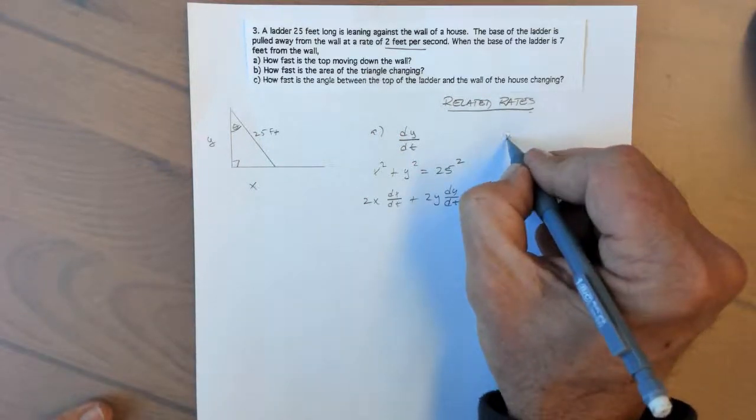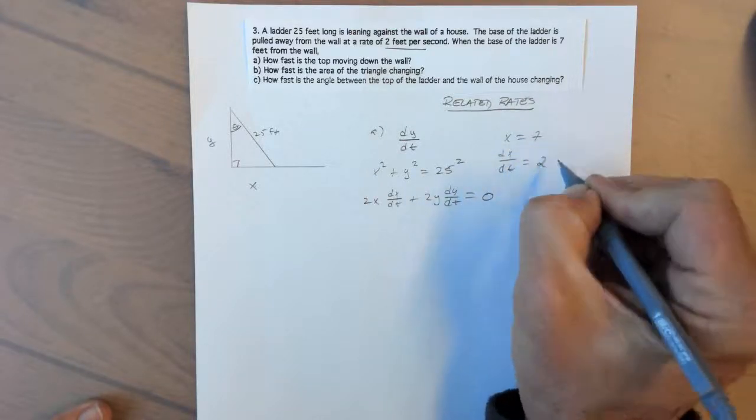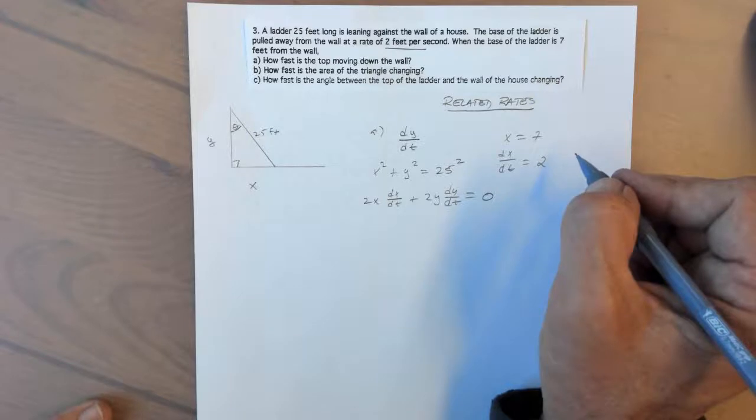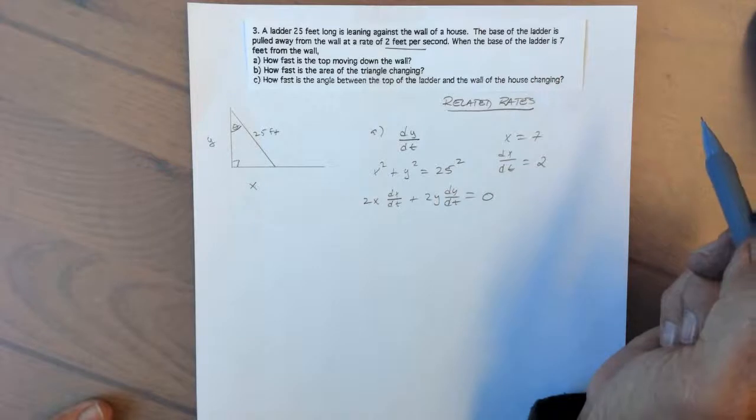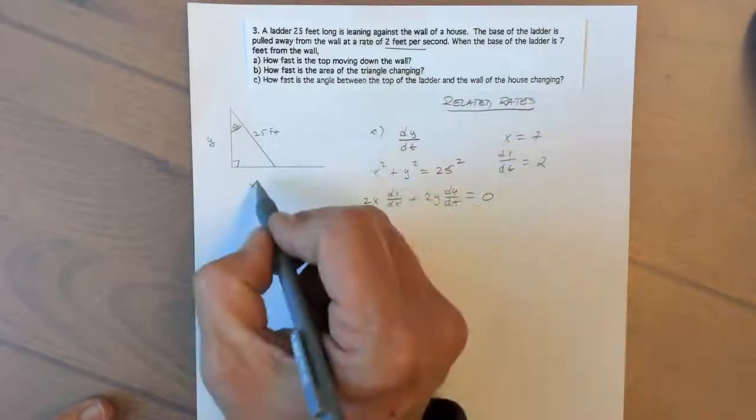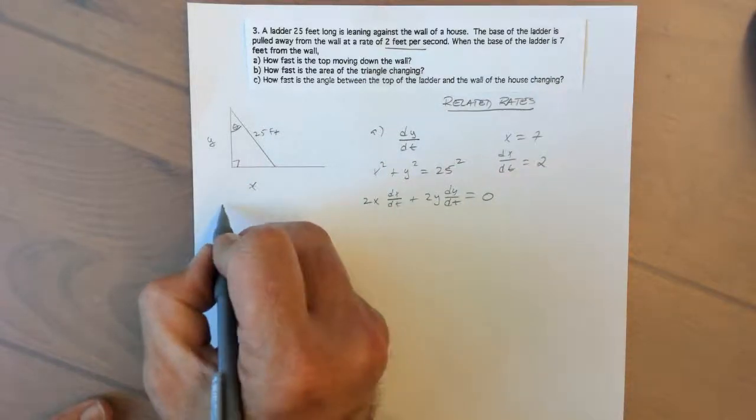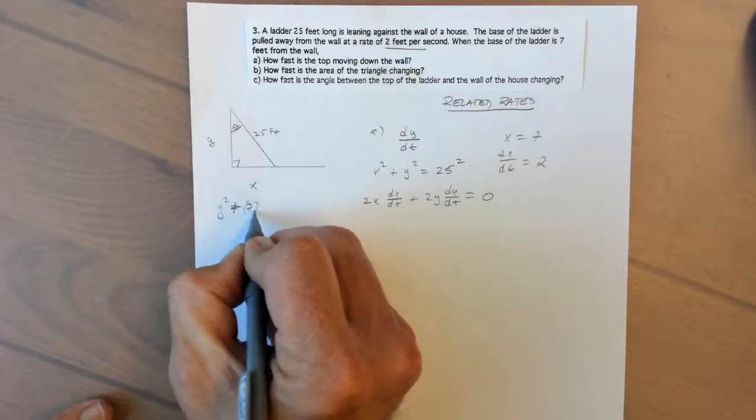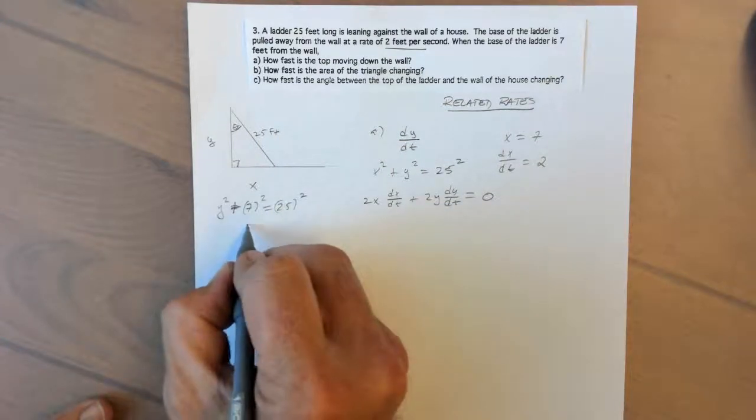They tell us in part A that x is 7 and that dx/dt is 2. We're going to have to determine the y value, and so we'll do that using the fact that x is 7 and the hypotenuse there is 25. So y squared plus 7 squared equals 25 squared, and so y would be 24.